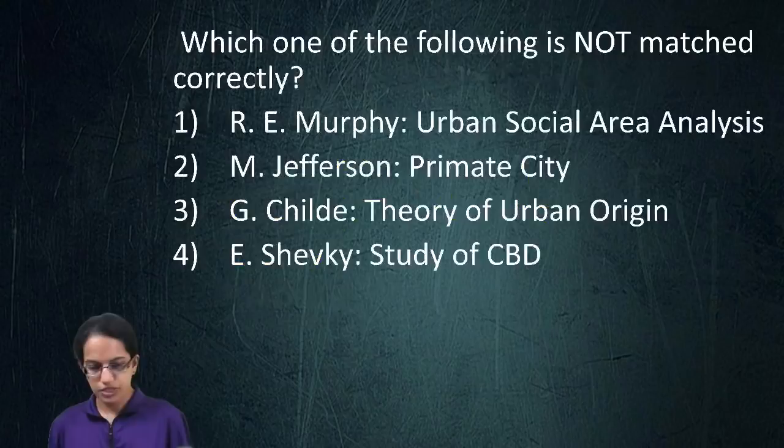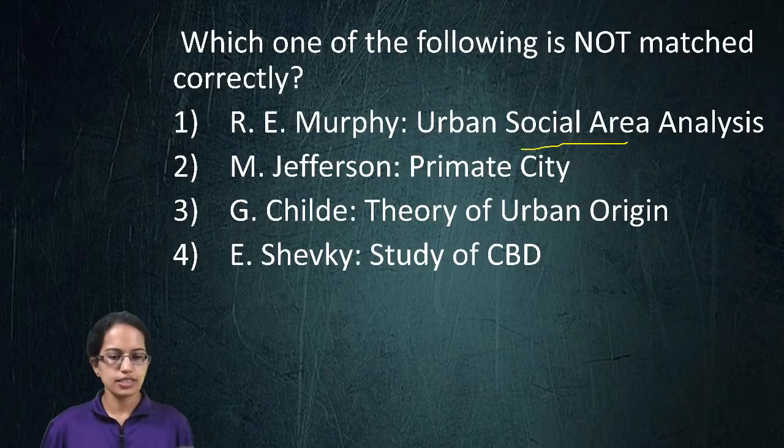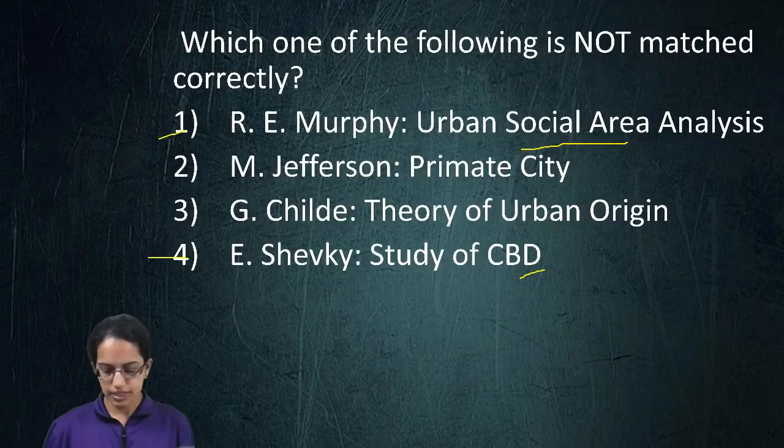Here, two options are incorrectly matched. Urban social area analysis was given by Shevsky and Bell, and it was not Shevsky who talked about the CBD — Murphy was one of those who discussed CBD. So options one and four are the incorrectly matched options here.